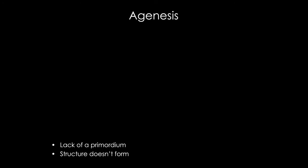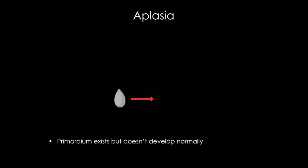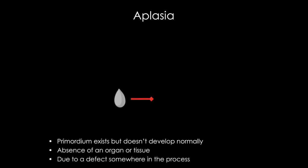Next up, aplasia. Aplasia is the failure of an organ to develop past the earliest stages. 'A' means not, and 'plasia' means formation — so, no formation. But unlike agenesis, the primordium, or in this case the seed, is actually there, but there's some kind of defect in the process. So development begins, but it arrests for some reason at very early stages.